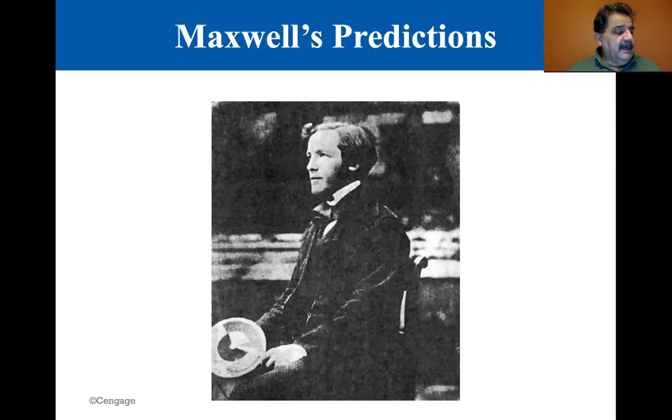Now Hertz confirmed Maxwell's predictions. After Maxwell died, he set up a tank circuit to show that you could get an oscillating circuit with an LC circuit. So you have here a capacitor and the potential energy stored in a capacitor is the Q max squared over 2C or maybe you were used to seeing it as 1 half Q squared max over C. The potential energy stored in the magnetic field of the inductor PEL is equal to 1 half Li squared, the inductor times the current squared.